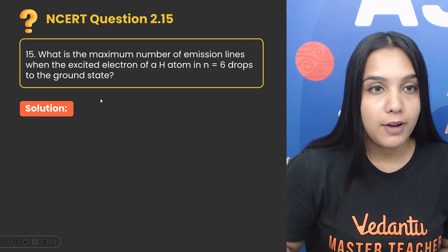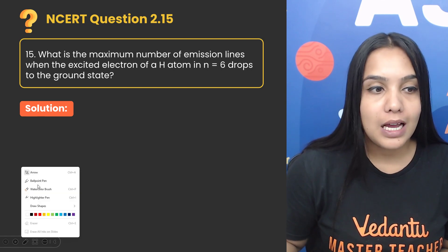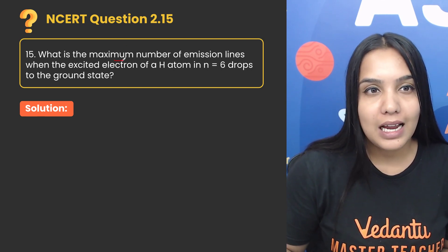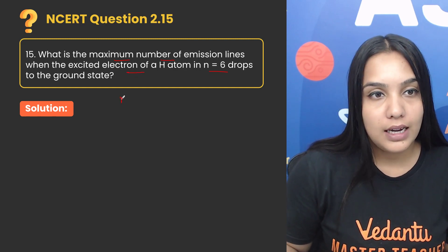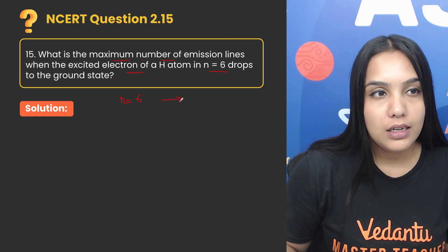This question asks us to find the maximum number of emission lines obtained when the excited electron of a hydrogen atom in n equals 6 drops to the ground state. Ground state means n equals 1.